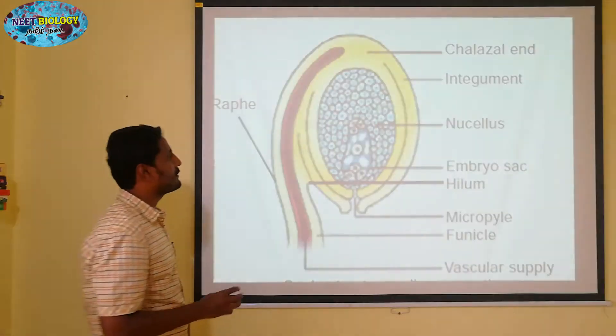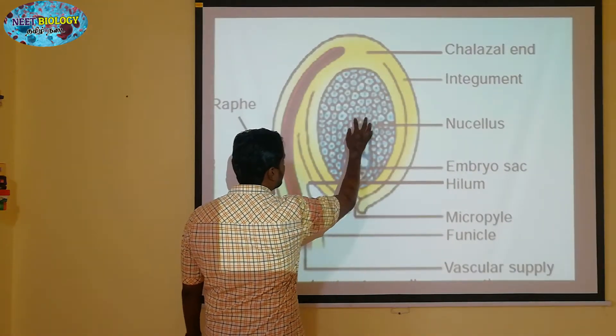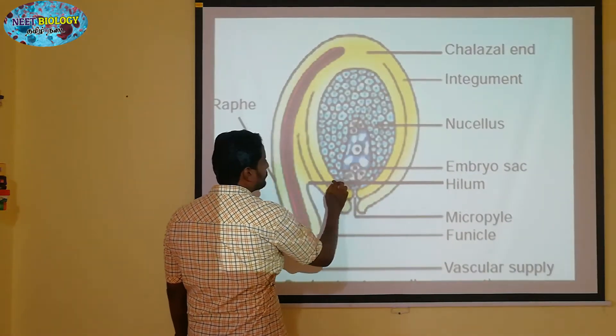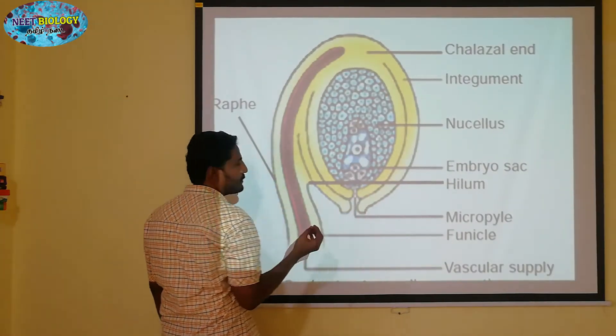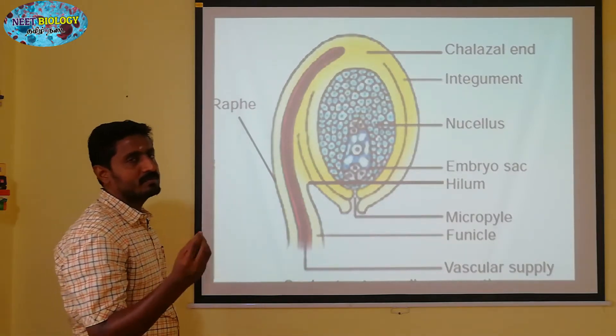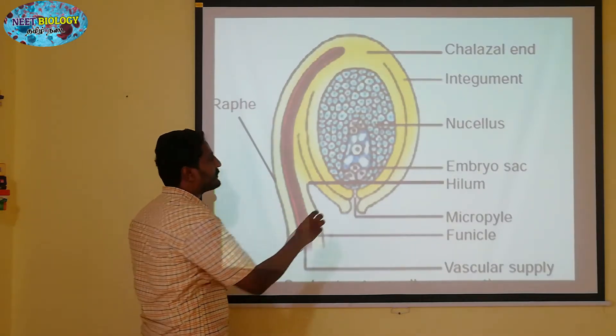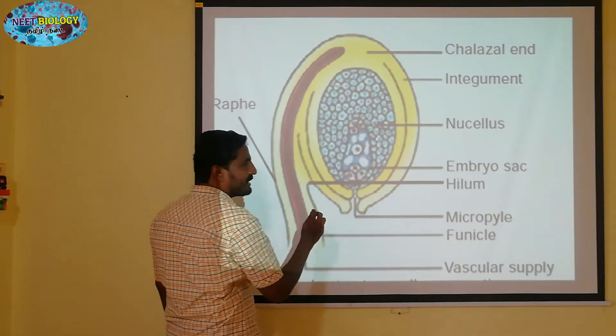The cotyledon muscles and the endosperm form a structure. The antipodal is 2N. This is a 2N structure.